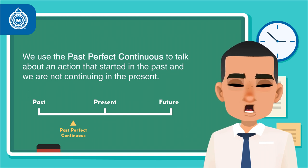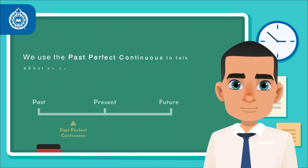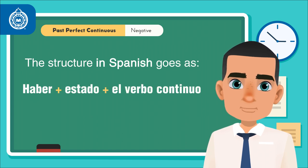Now, let us contrast it with Spanish. The structure goes as: Haber, conjugado de acuerdo con el sujeto, más estado, el participio pasado de estar, más el verbo continuo, ando o vendo.